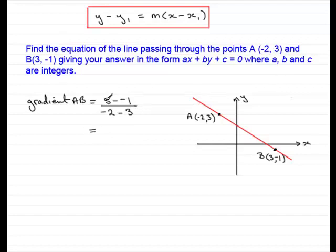And if I work this out, we've got 4 divided by -5, which in other words is -4/5. So we have a gradient then of -4/5.